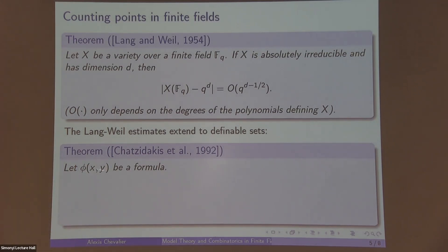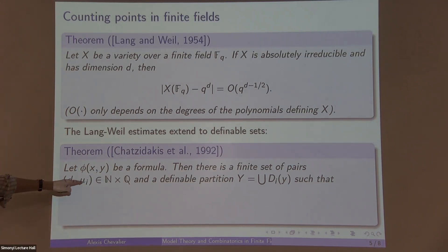So let φ(x,y) be a formula in the language of rings. There is a finite set of pairs (d_i, μ_i), where d is going to be a dimension, μ_i is going to be a measure, and there is a definable partition of y, so in the d_i(y), y is the domain of our little variable y, such that in any finite field F_q for any parameter b, φ(F_q) against b has roughly size μ_i · q^(d_i).